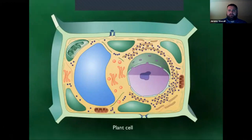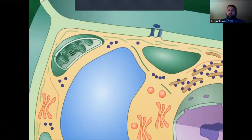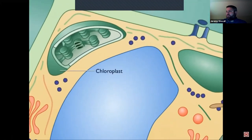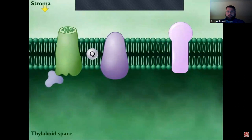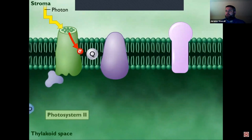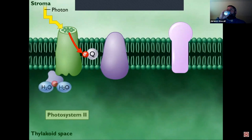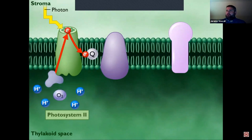In plants, photosynthesis occurs in specialized organelles called chloroplasts. The internal membranes of chloroplasts are organized into sacs called thylakoids. Surrounding the thylakoid membrane system is a semi-liquid substance called stroma. Photosynthetic pigments are clustered together to form photosystems. When a photon of light strikes the reaction center of photosystem two, it excites an electron. Two water molecules bind to an enzyme at the reaction center, which splits the water and uses the electrons from the water to replace the electrons removed from the reaction center. Oxygen is produced in this process.